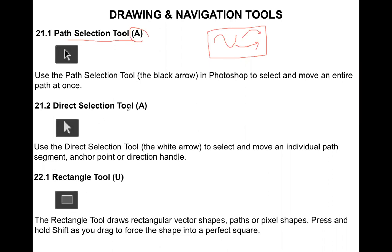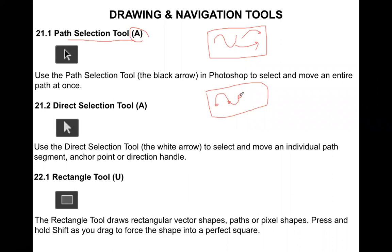The Path Selection Tool is used to move the entire path. The next is the Direct Selection Tool. With the Direct Selection Tool, you will have a white arrow. The Direct Selection Tool enables you to edit the anchor points of the path, and you can change the path through those anchor points.